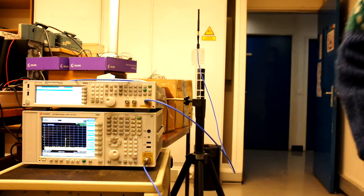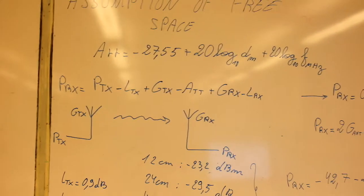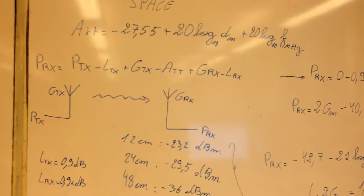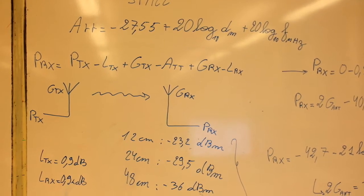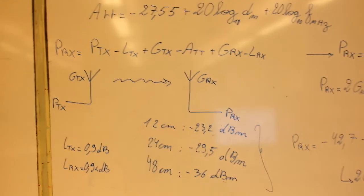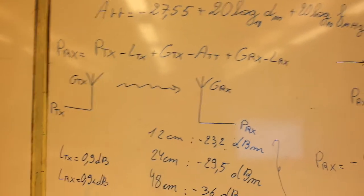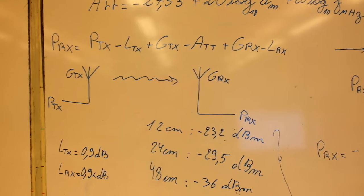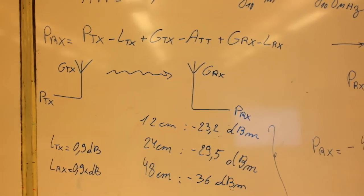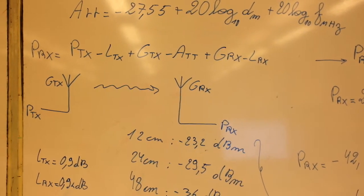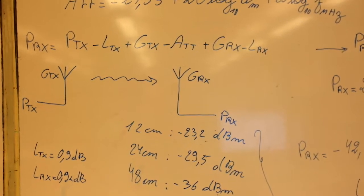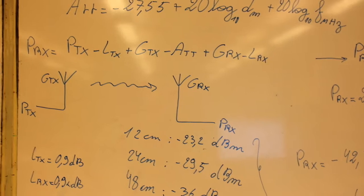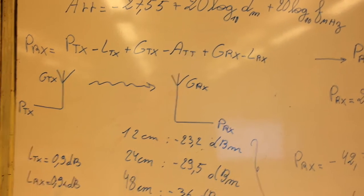So let's have a look at the measurements and at the global equations. If we assume free space we can say that the attenuation in free space is minus 27.55 plus 20 log base 10 the distance in meters plus 20 log base 10 of the frequency in MHz. The link budget will be the received power PRX equal to PTX the transmitted power minus the losses in the cable. We have measured the losses in the cable as being 0.9 dB. Then you will have the gain of the transmitting antenna GTX minus the attenuation that you get between the two antennas that is due to the propagation channel, then plus the gain of the receiving antenna minus the losses on the cable.